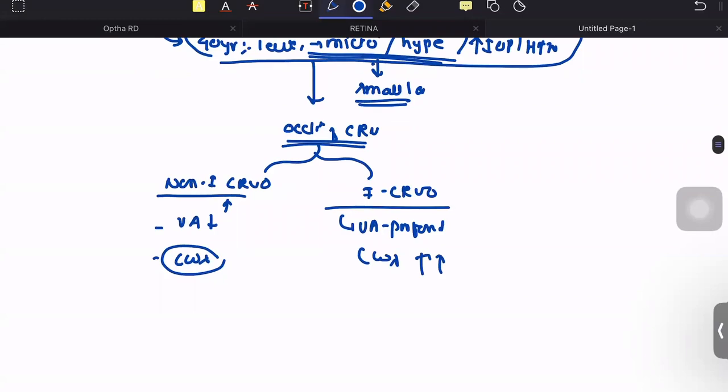Along with that, as the whole of the retina is getting involved in the ischemic variety, the pupillary reaction would show a paradoxical dilatation phenomenon called Marcus Gunn pupil, whereas it will be absolutely normal in this case.